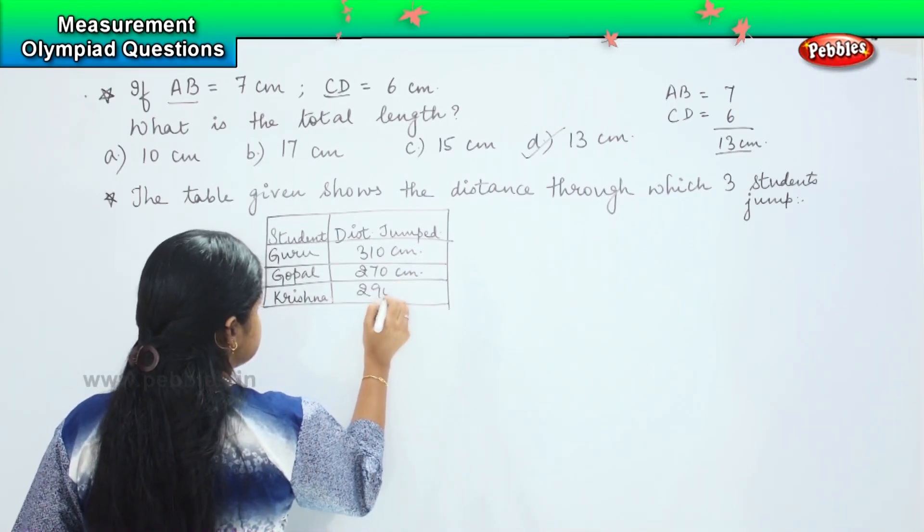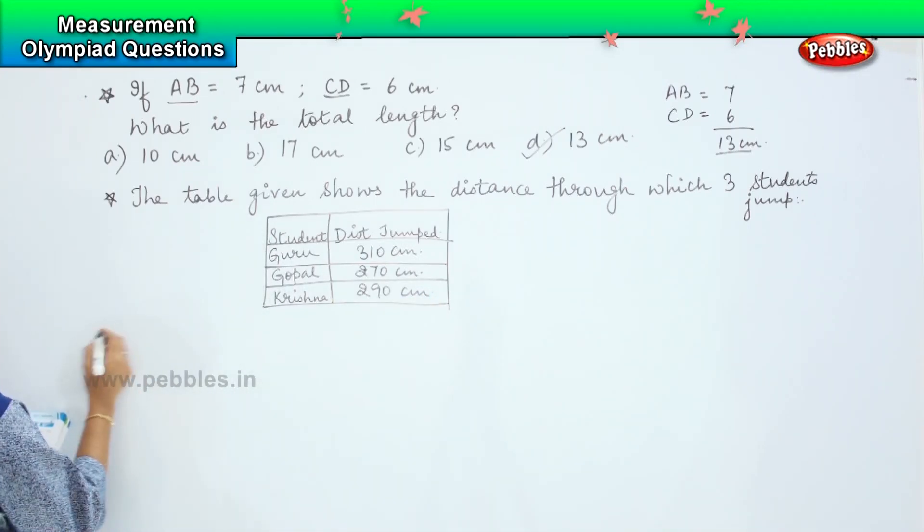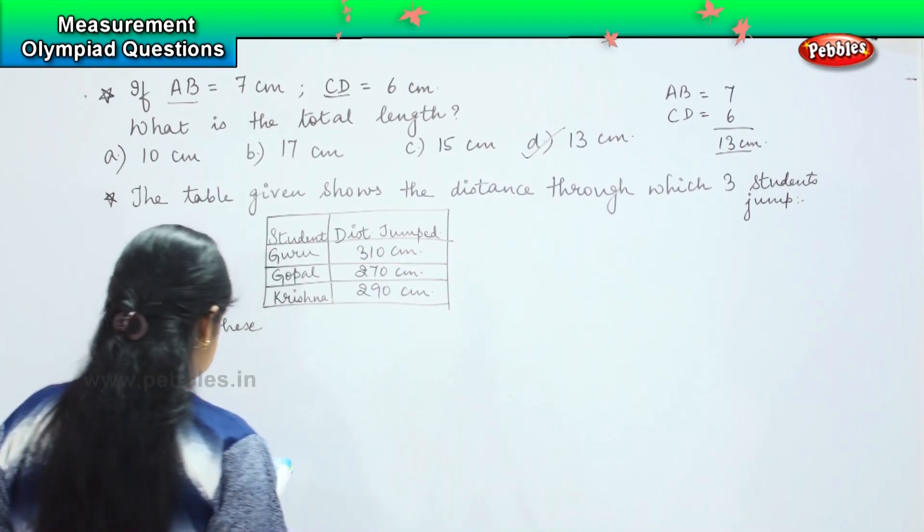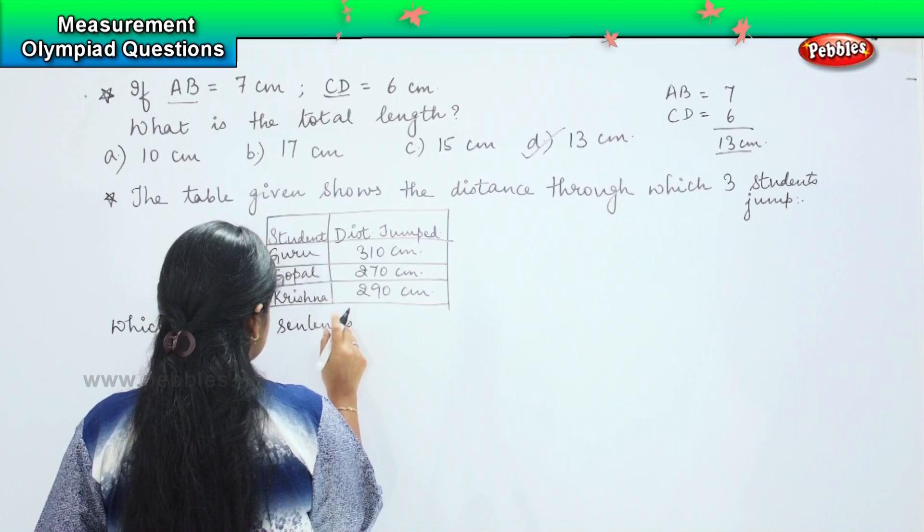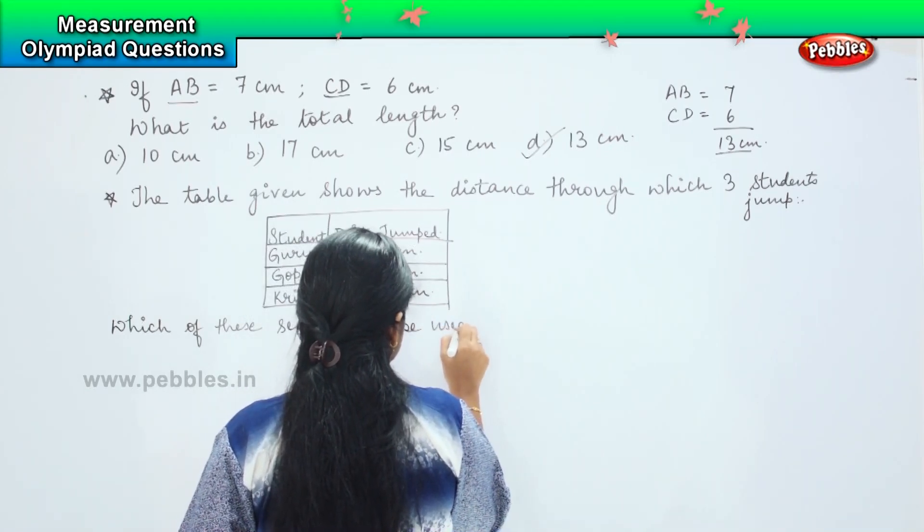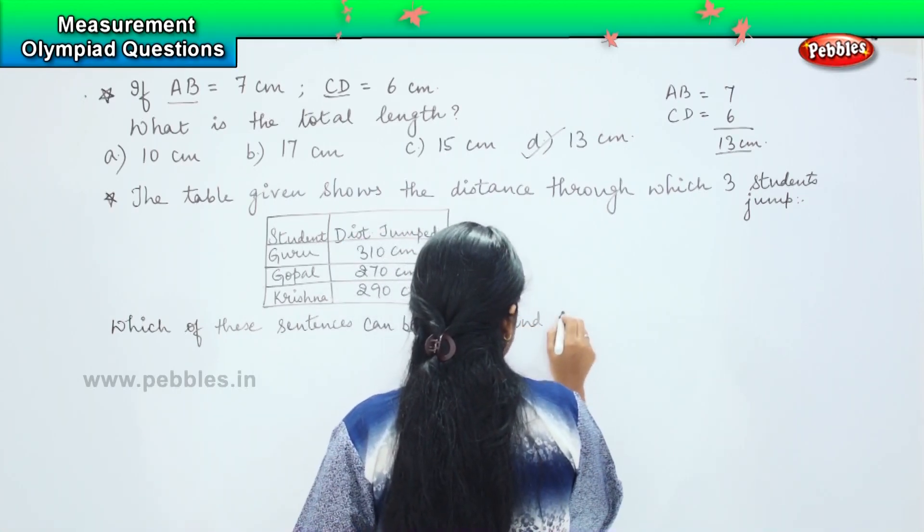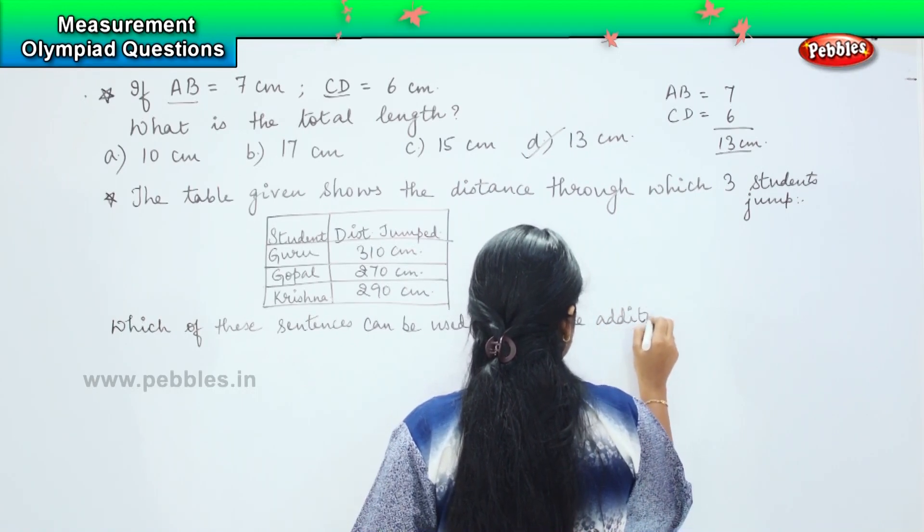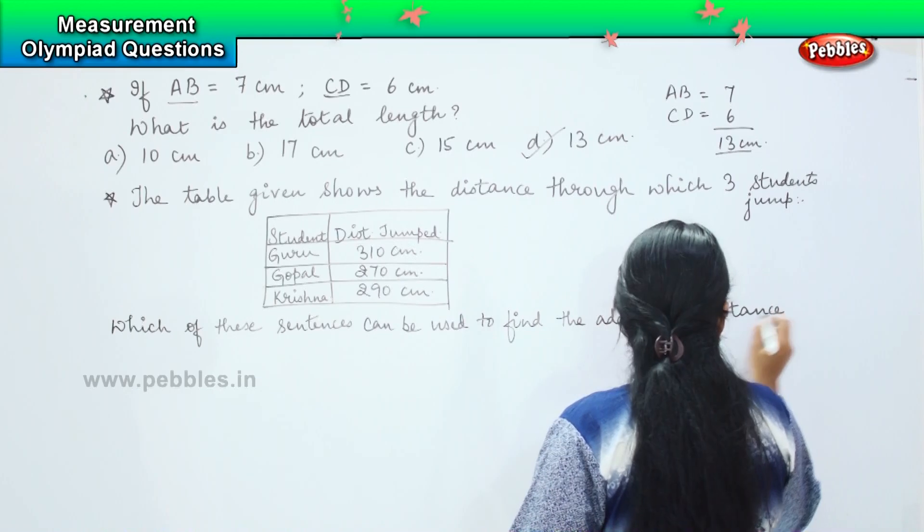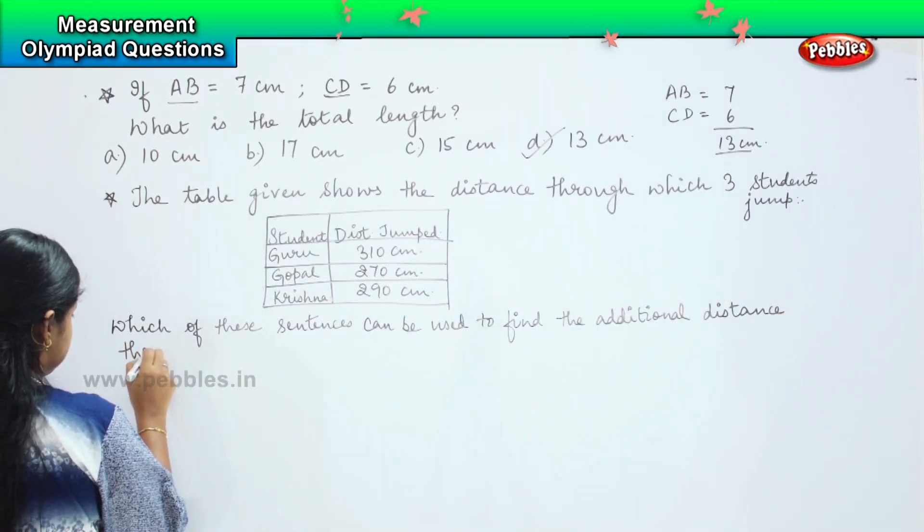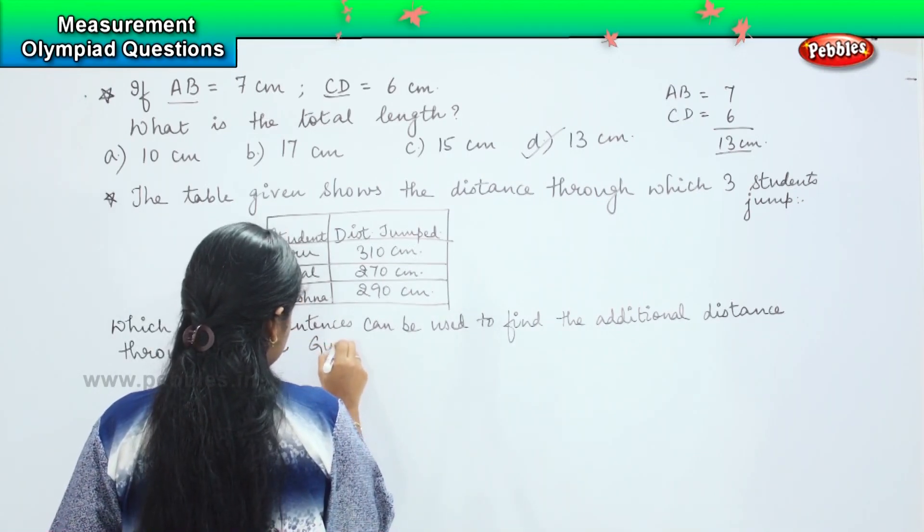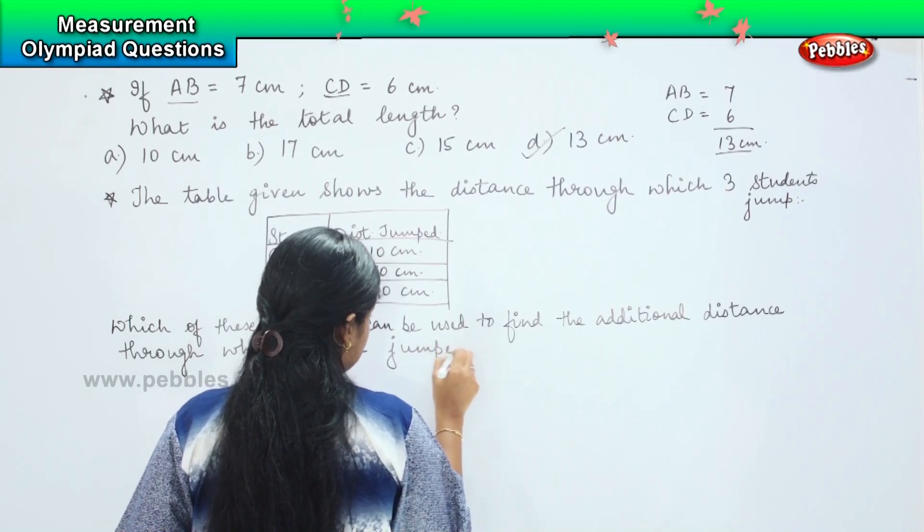The question for you is: which of these sentences can be used to find the additional distance through which Guru jumped than Krishna?